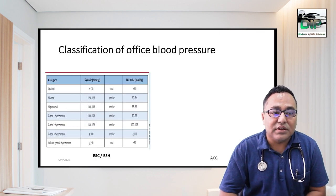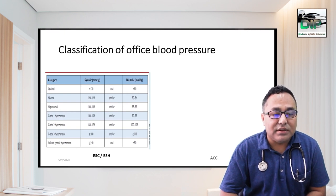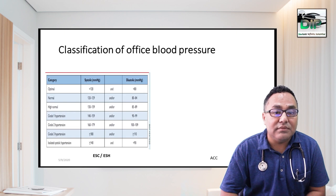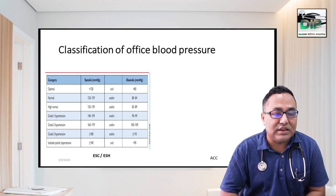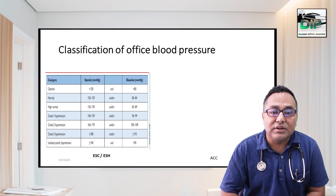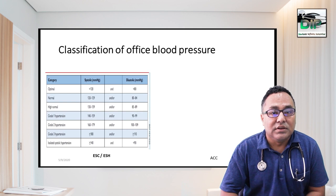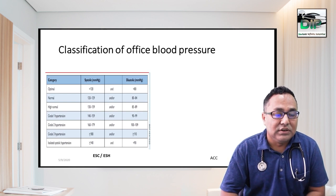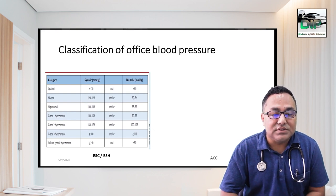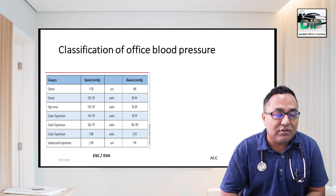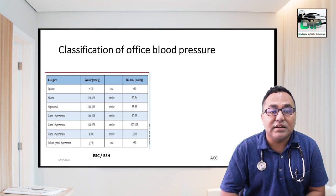Looking at the classification of hypertension by office blood pressure measurement, as per the European Society of Cardiology and European Society of Hypertension: normal blood pressure is 120/80 mmHg. High normal, or pre-hypertension, is systolic 130–139 mmHg and diastolic 85–89 mmHg. If blood pressure is ≥140 mmHg systolic and ≥90 mmHg diastolic, that is hypertension. This patient's BP of 143/88 falls under Grade 1 hypertension, which is systolic 140–149 mmHg and diastolic 90–99 mmHg.